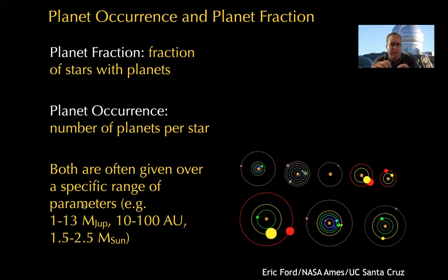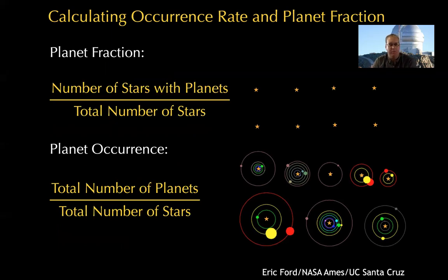It's rare to talk about this across all of parameter space. Normally this is a zoom in on a particular bit of parameter space, usually corresponding to the survey that just did the work. For a transit survey, you'll see results given for relatively close-in planets. For a direct imaging survey, you might see numbers like the planet occurrence rate from 1 to 13 Jupiter masses, 10 to 100 AU, 1.5 to 2.5 solar masses. The basic definition is straightforward: you count up the number of stars with planets, divide that by the total number of stars, and that gives you the planet fraction. For planet occurrence, you count up the total number of planets, divide by the total number of stars, and you get the planet occurrence rate.